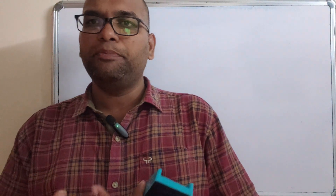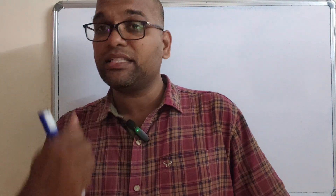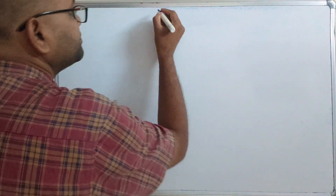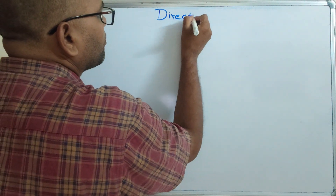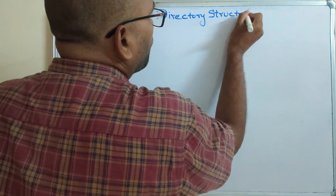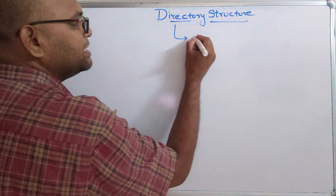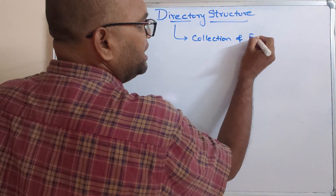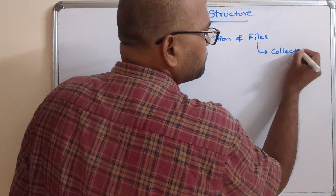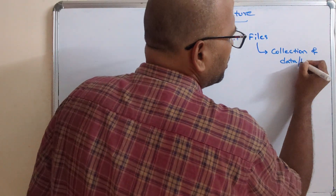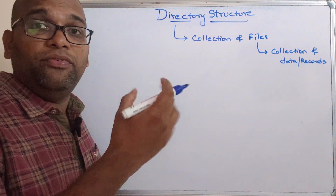We know the difference between a file and a directory. A file is a collection of related data, or a collection of records. Whereas a directory is a collection of files. So how these directories will be structured so that the files can easily be accessed? There are different ways to structure these directories in order to access the files. Let us start today's session on directory structure.